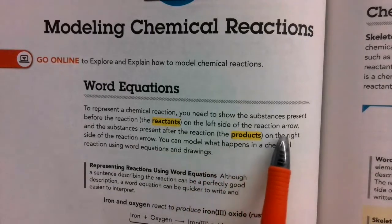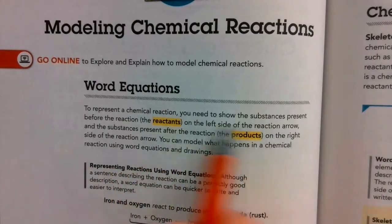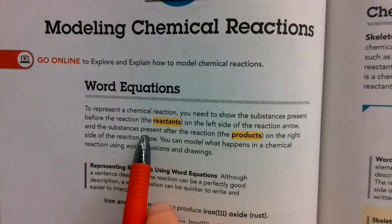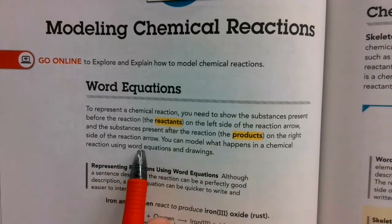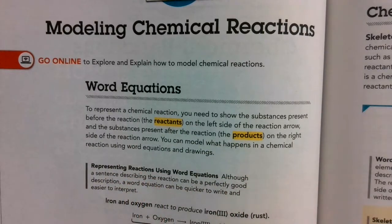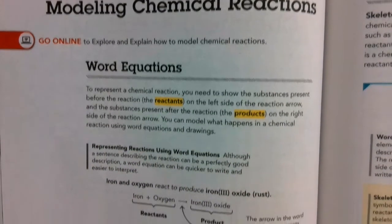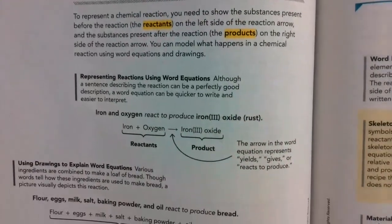The reactants are on the left side of the reaction arrow, and the substances present after the reaction — the products — are on the right side of the reaction arrow. So basically, the products are on the right, the reactants are on the left, and you're combining the reactants to form a new substance.